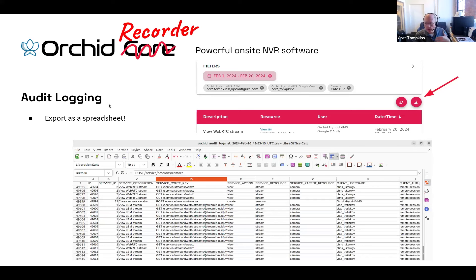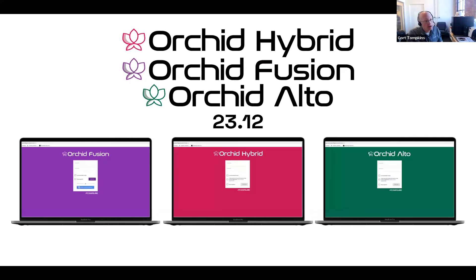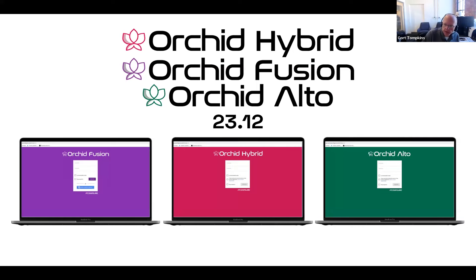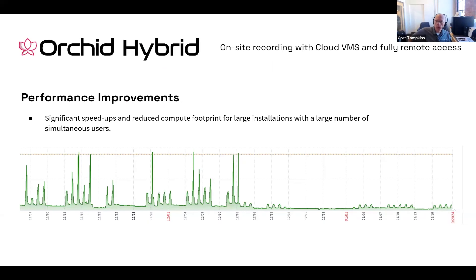So that is audit logging — that was the focus of the 23.12 release, the big thing that's new. In Orchid Hybrid, Orchid Fusion, and Orchid Alto — the management platforms — the 23.12 release was really all behind the scenes work. It's nothing that's user facing. But there are significant performance improvements in Orchid Fusion and Orchid Hybrid for large enterprise users.